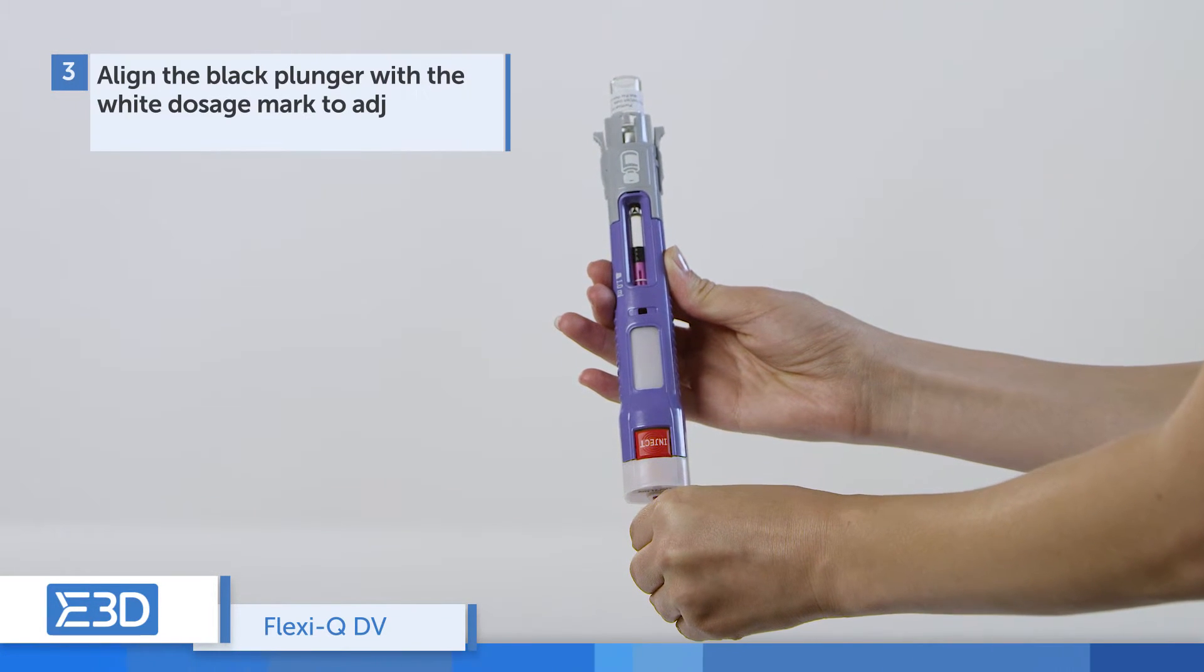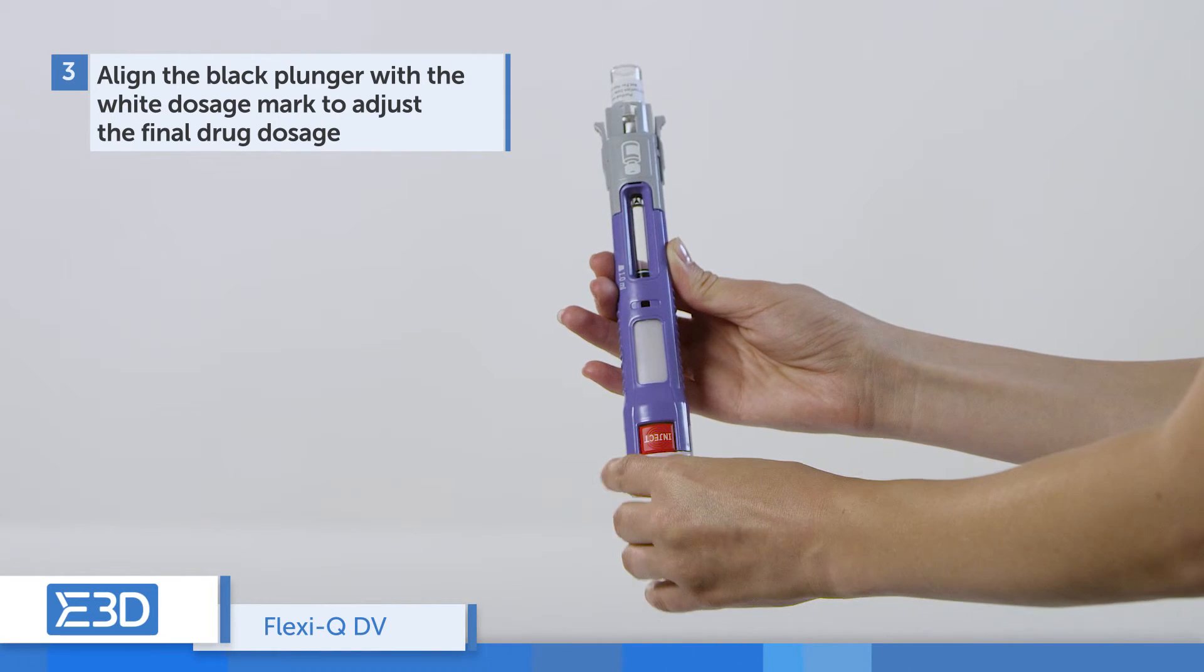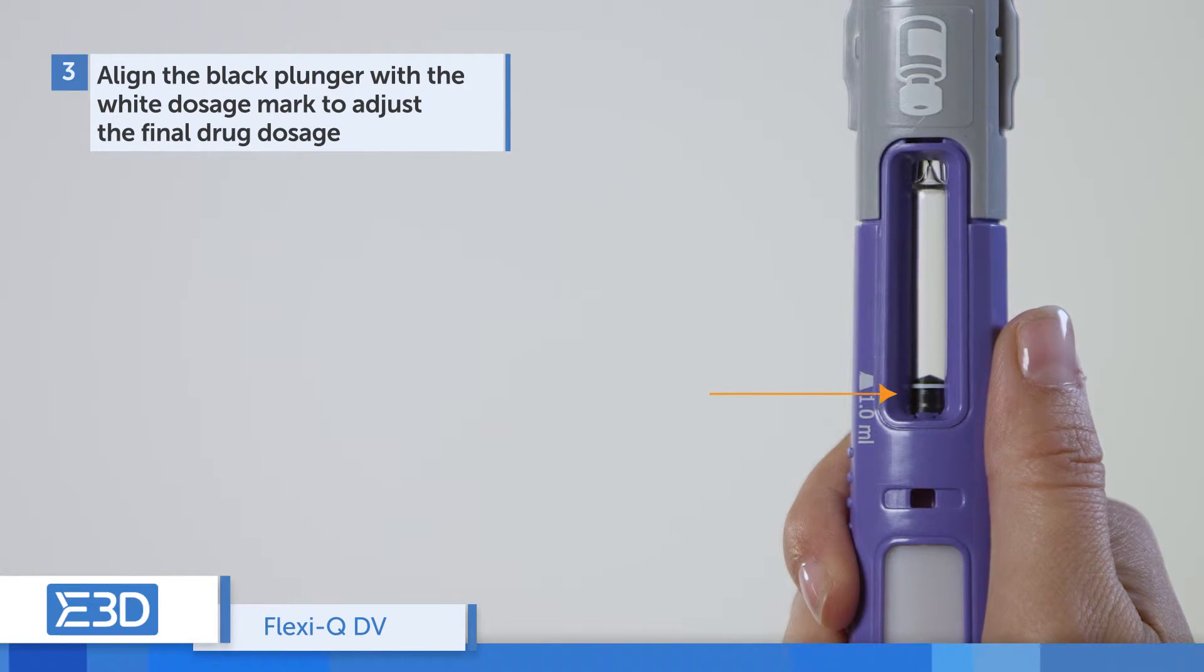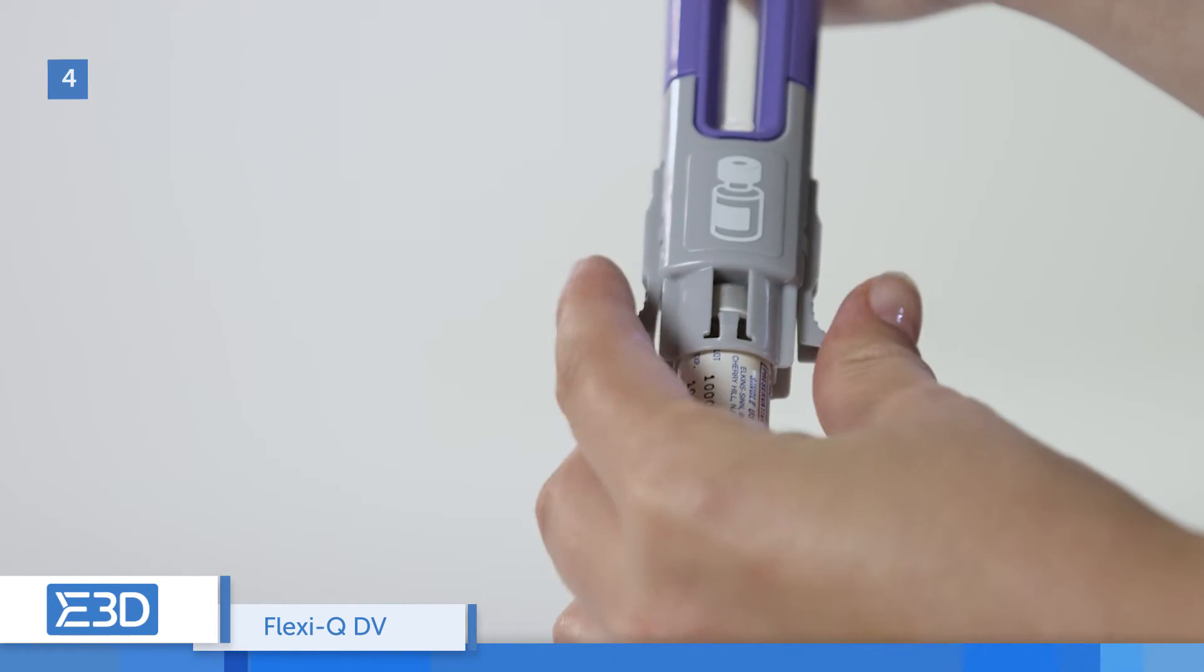To adjust the final drug dosage, align the black plunger with the white dosage mark on the device. Remove the vial adapter.